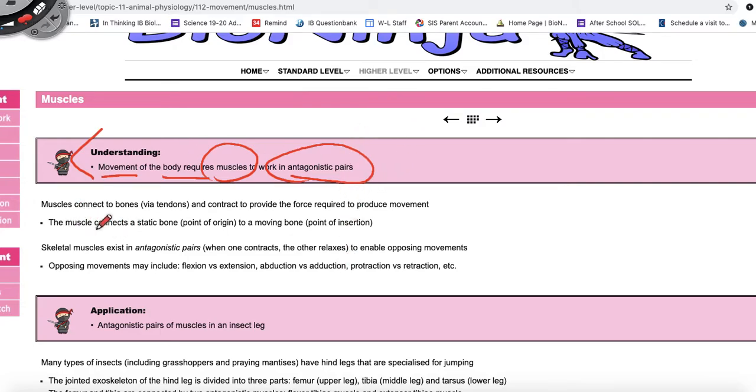So let's remember that muscles connect to bones via the tendons and they contract to provide the force required to produce movement. So the muscle is going to connect to a static bone, this is called the point of origin, and to a moving bone, which is the point of insertion. Skeletal muscles exist in antagonistic pairs. So remember these are skeletal muscles, muscles that connect to bones.